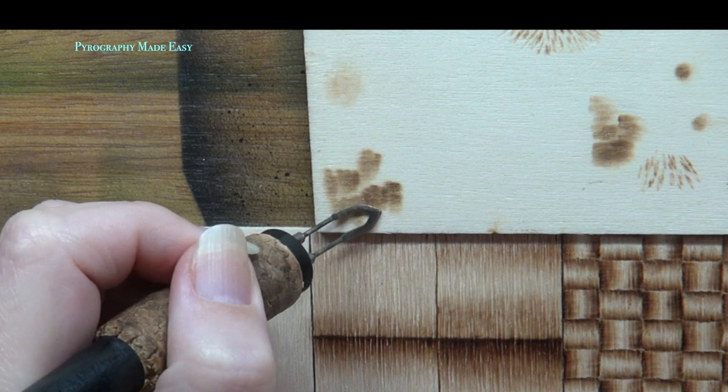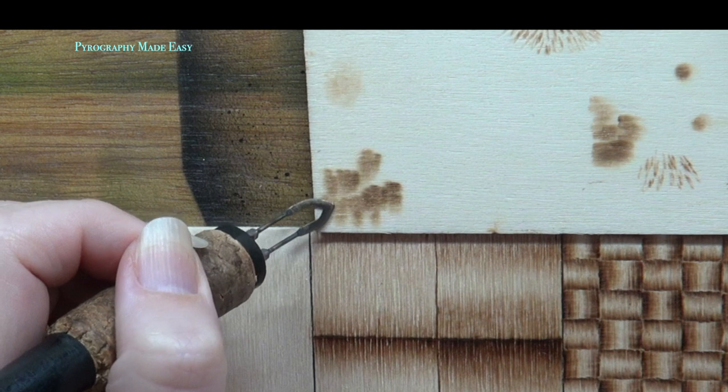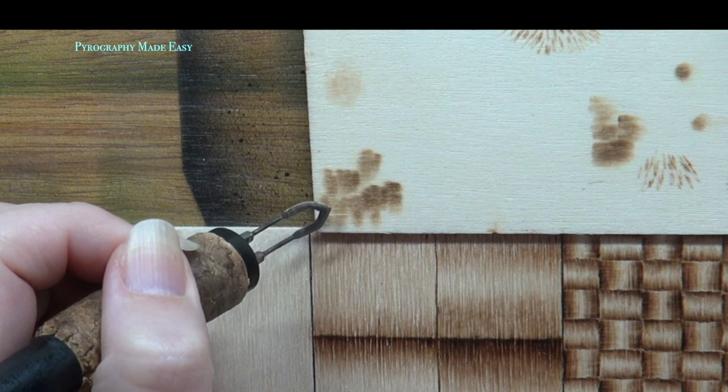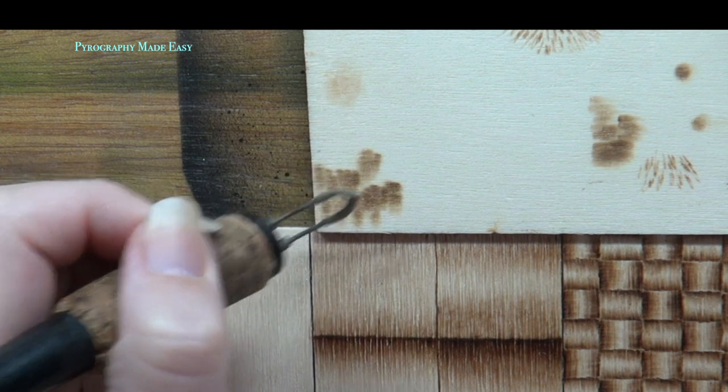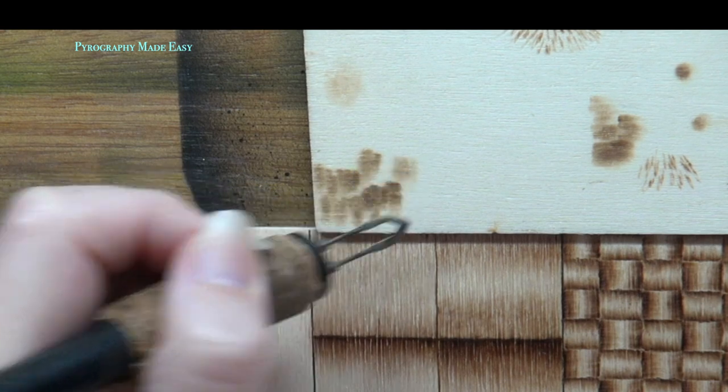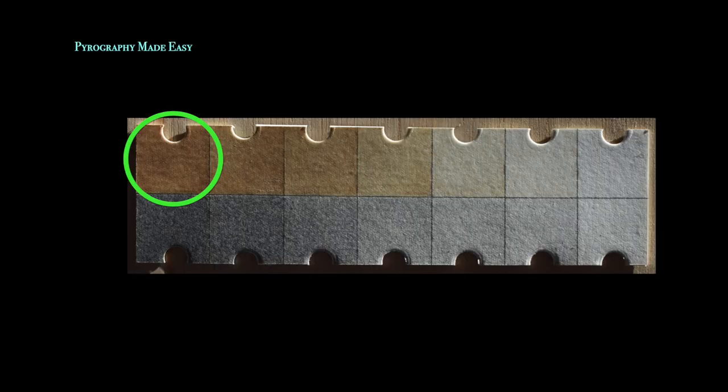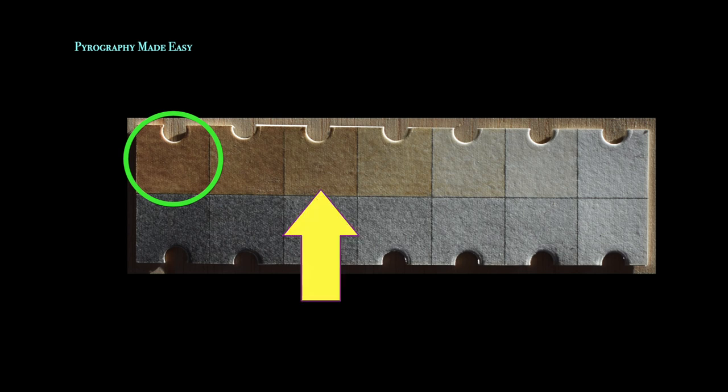I recommend setting your burner to get a result that is one to three shades lighter than the final color should be to account for reburning. On this chart, the green circle is indicating the color that I desire. The yellow arrow is the color that I will set my burner to to allow for reburning.